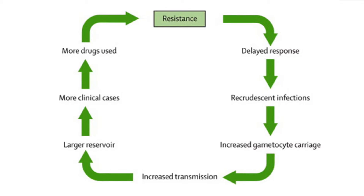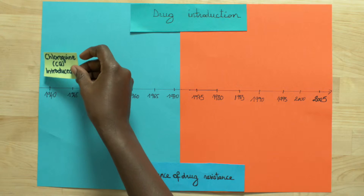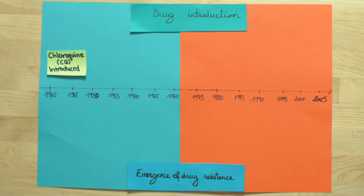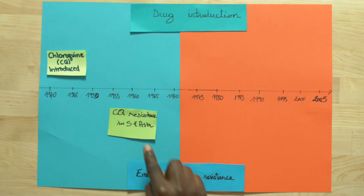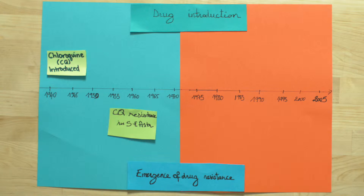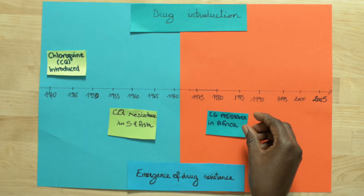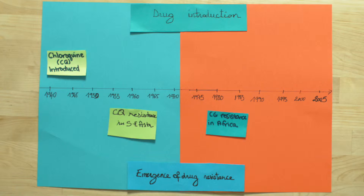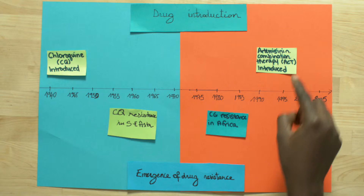Malaria is a persistent problem in endemic areas. The resistance of Plasmodium falciparum to anti-malaria drugs constitutes an important factor. Chloroquine was introduced in 1944, and resistance emerged in Southeast Asia in the 1960s. This resistance spread around the world, causing an increase in morbidity and mortality. For this reason, artemisinin and ACT-derivatives were introduced in 1993.